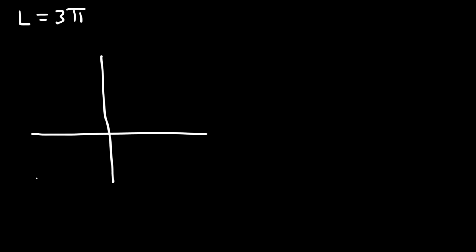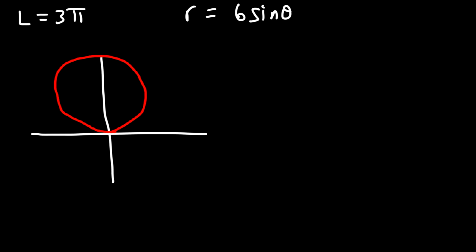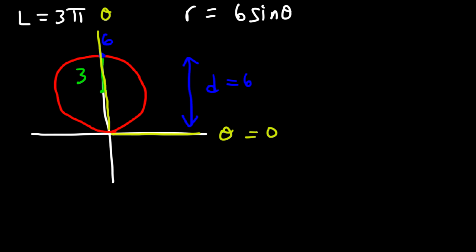That is the arc length from 0 to pi over 2. Now let's draw a picture of the graph. r = 6 sine theta is basically a circle along the y-axis, ending at 6. The diameter of this circle is 6, which means the radius is 3 units. Along the horizontal line we have θ = 0, and along the vertical we have θ = π/2. We calculated the arc length from 0 to pi over 2 — that's the length of the segment highlighted in white.